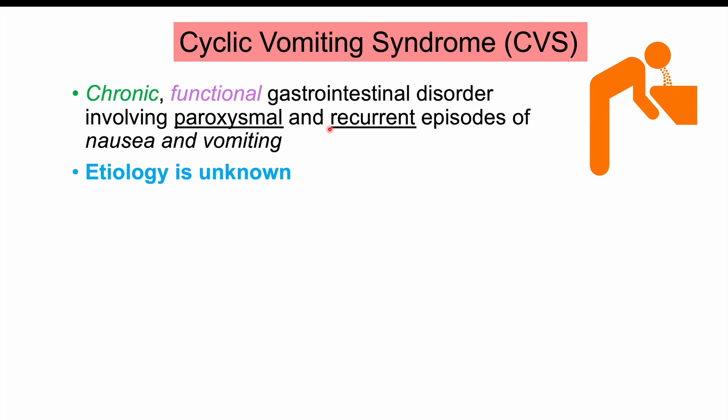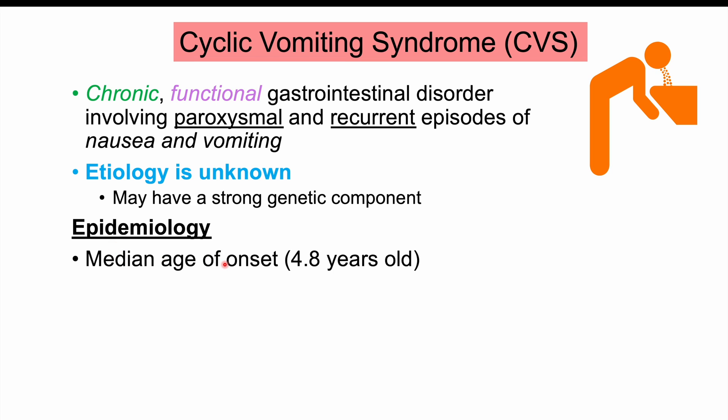The etiology for this condition is unknown, but there is likely a strong genetic component. The median age of onset is roughly 4.8 years old, so it's often considered a childhood onset condition. In some cases, if onset hasn't occurred in childhood, an adult may develop this condition, with the average adult age of onset being around 21 years of age.